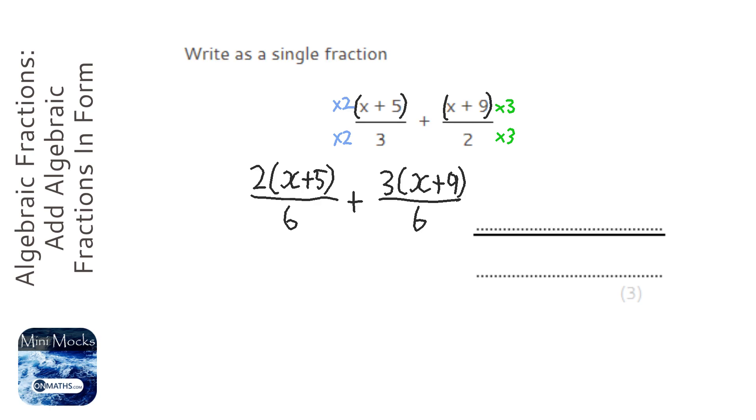And then we've got 3 brackets x plus 9 at the bottom, also a 6. So I'm going to expand the brackets, so it's 2x plus 10, 3x plus 27.